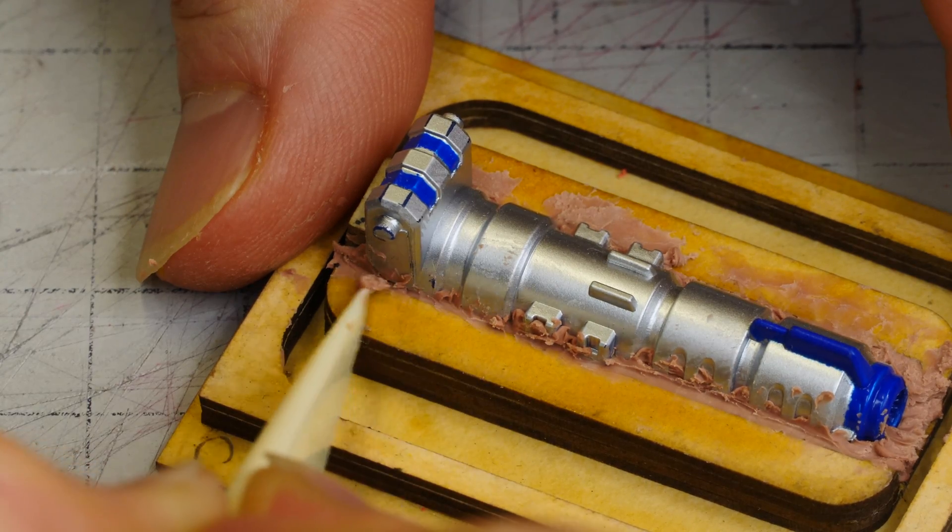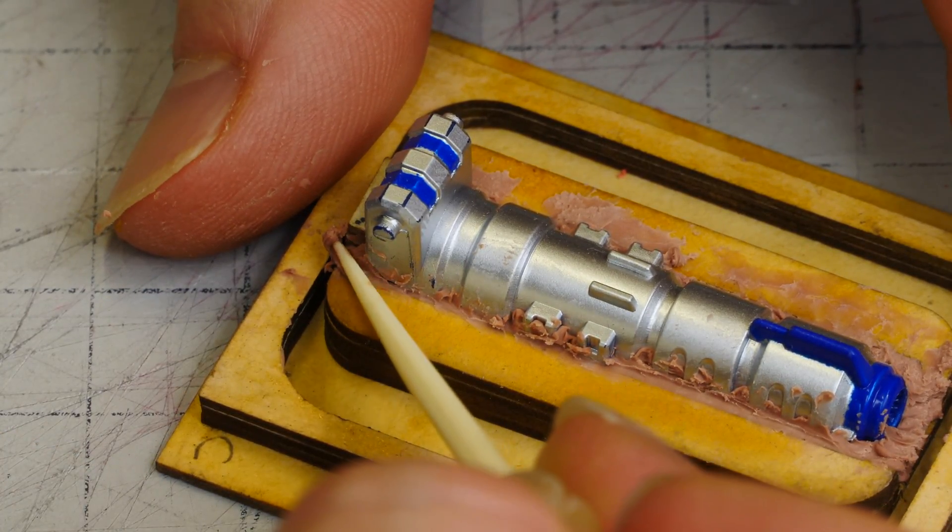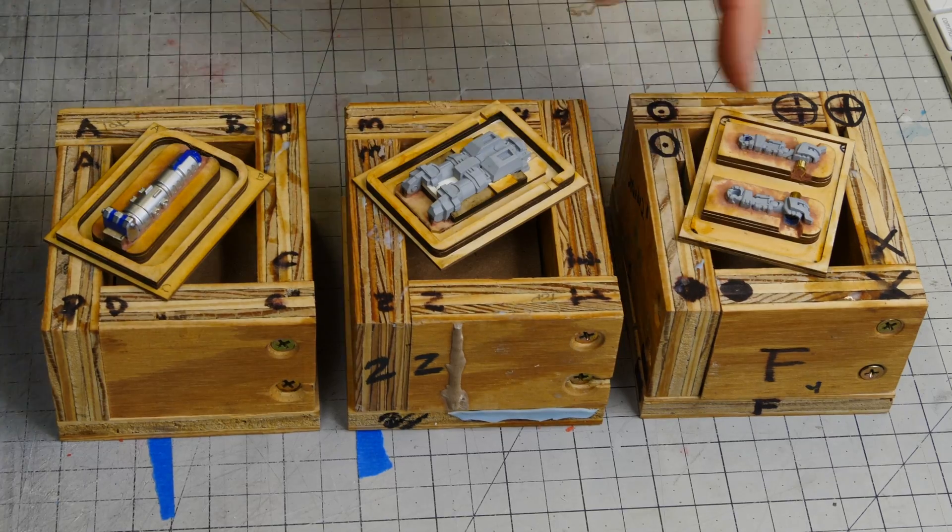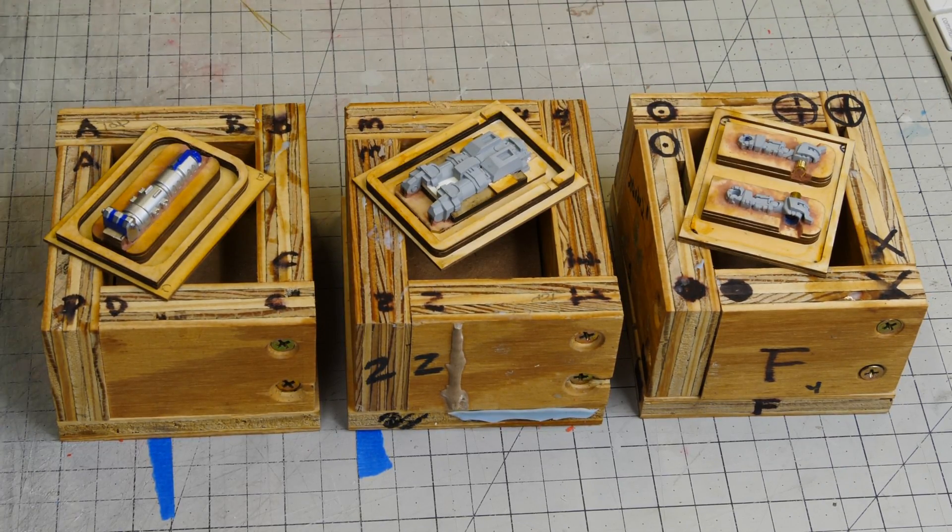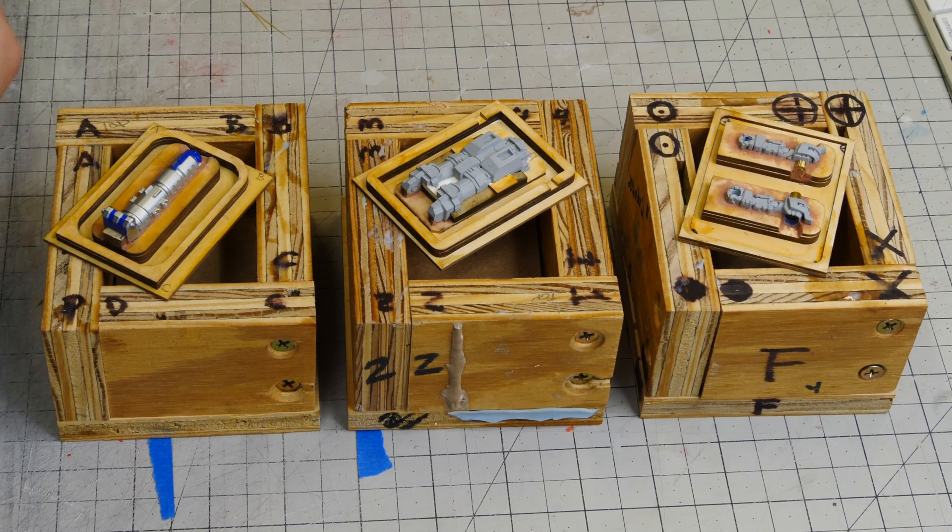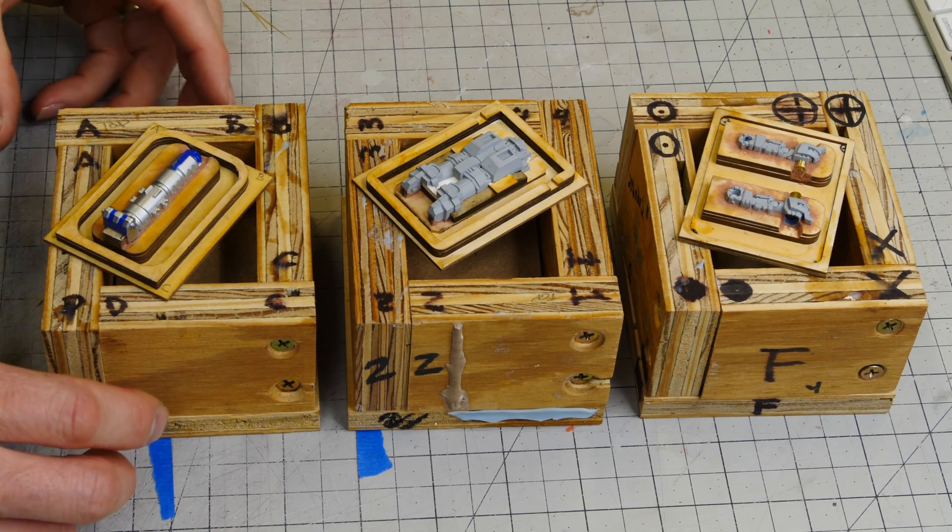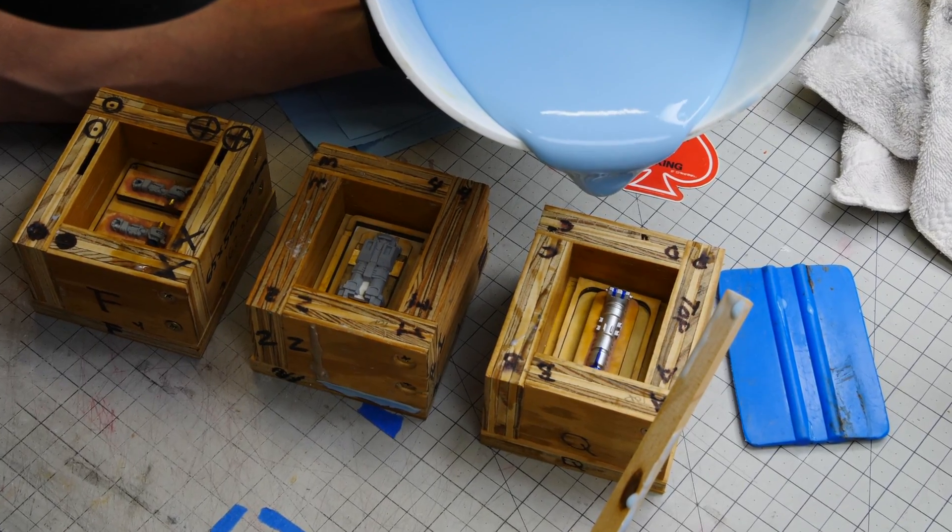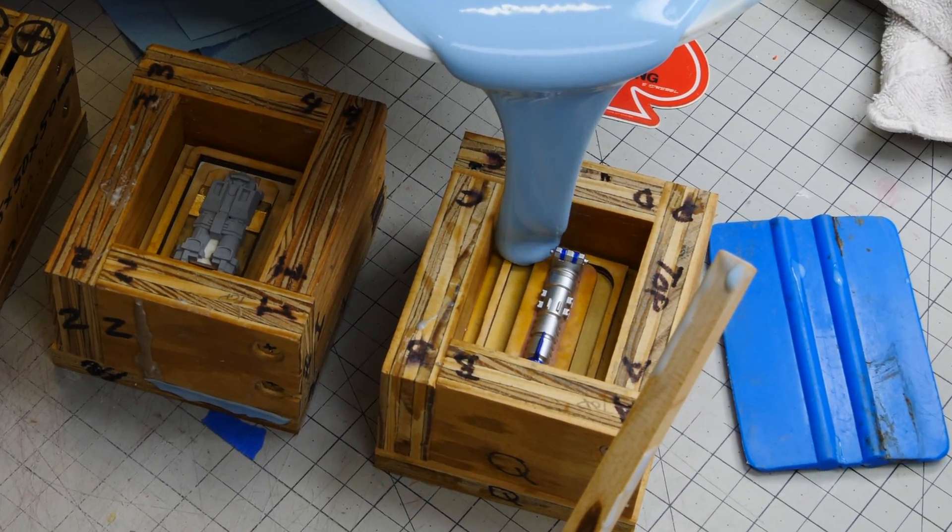So these are the three parts all finished and clayed, ready to be cast. I will cover silicone molding the A side, and then removing the parts and casting the B side in the next video. And then the final video will be the actual resin casting of the parts.